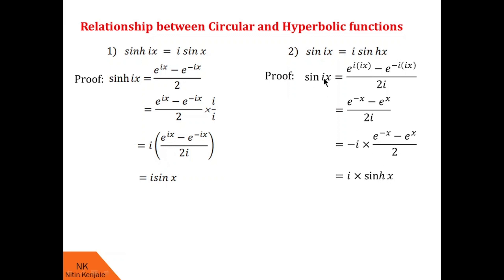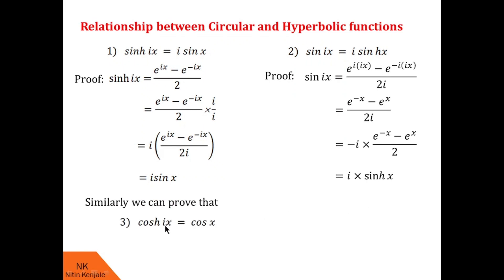Similarly, one can prove that cosh(ix) equals cos x and cos(ix) equals cosh x. I am leaving the proof of these third and fourth identities as an exercise for you.